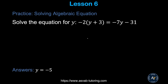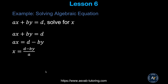Here's another type of algebraic equation: −2(y + 3) = −7y − 31. Try solving it using the same approach as the previous example and make sure you get the correct answer.